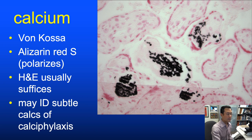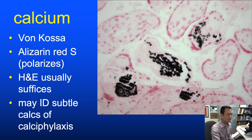The Von Kossa stain for calcium is a silver-based stain I rarely order, as calcium is usually readily apparent on H&E. However, I find it helpful occasionally for identifying very subtle calcification when trying to rule out calciphylaxis—subtle capillary or perieccrine calcification may be revealed with Von Kossa when not readily seen on H&E.